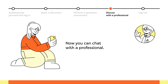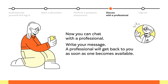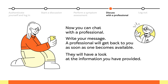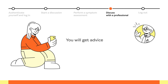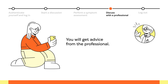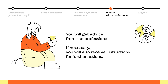Next, you can chat with a professional. Write your message — a professional will get back to you as soon as one becomes available. Before your discussion, they will have a look at the information you have provided. During the discussion, you can explain your situation in more detail and get advice from the professional. If necessary, you will also receive instructions for further actions.